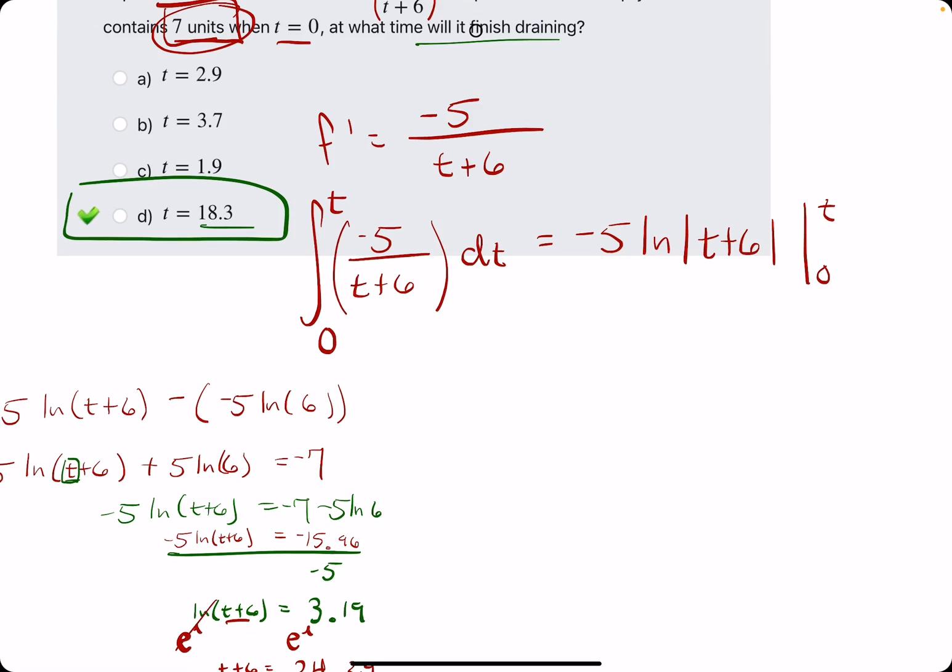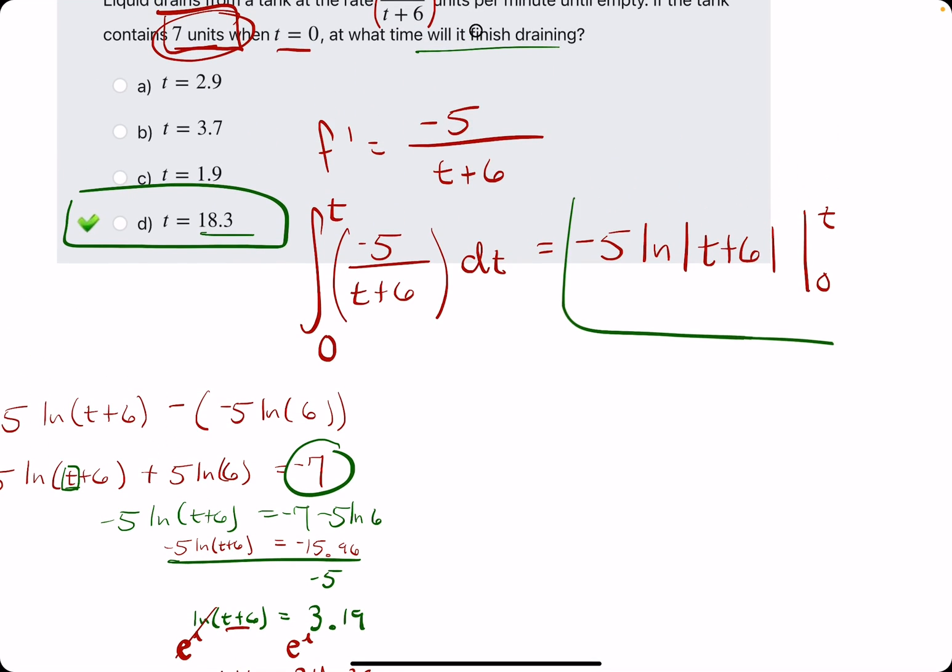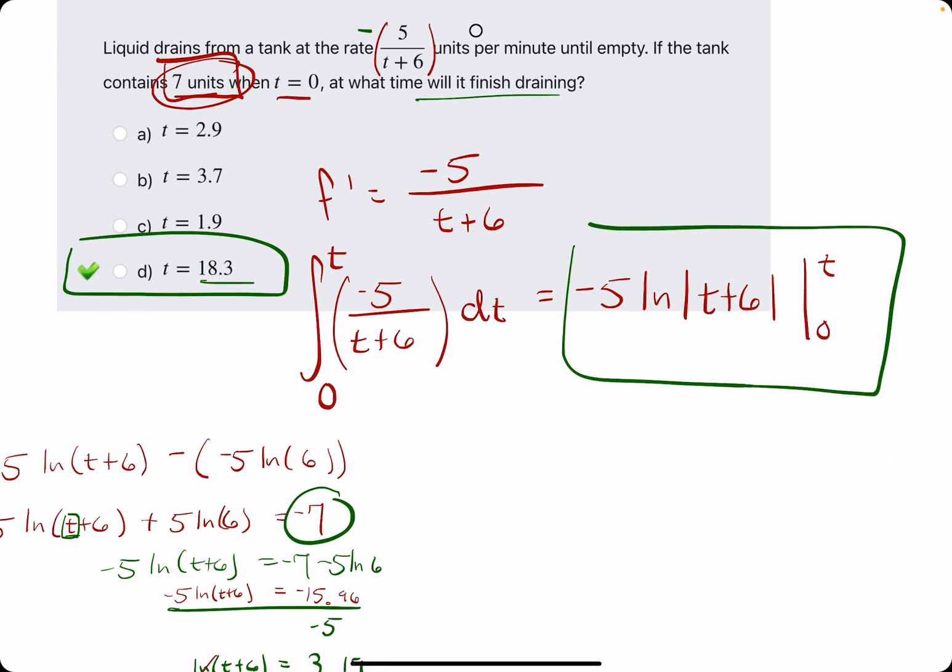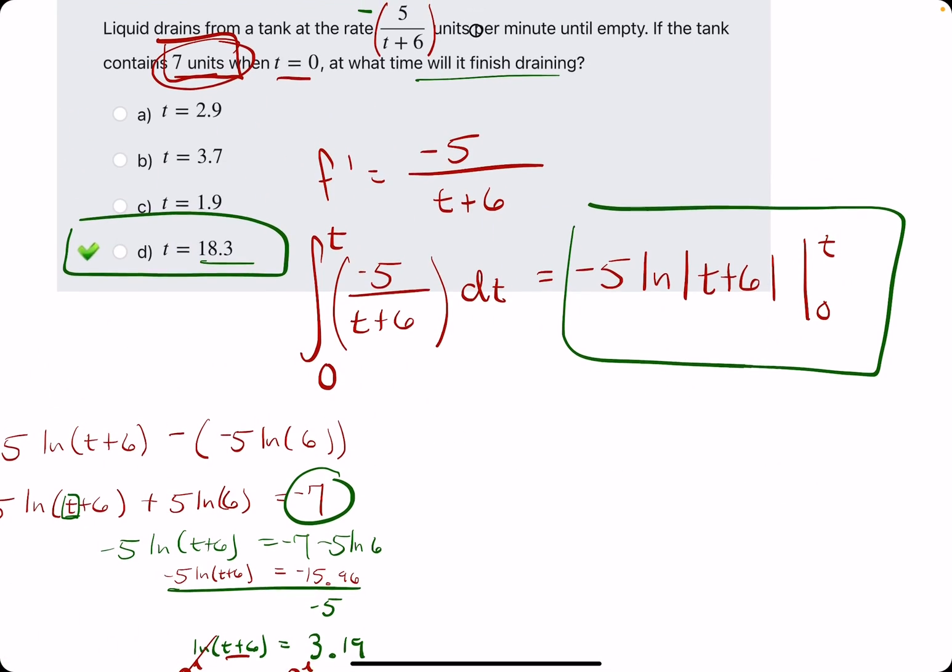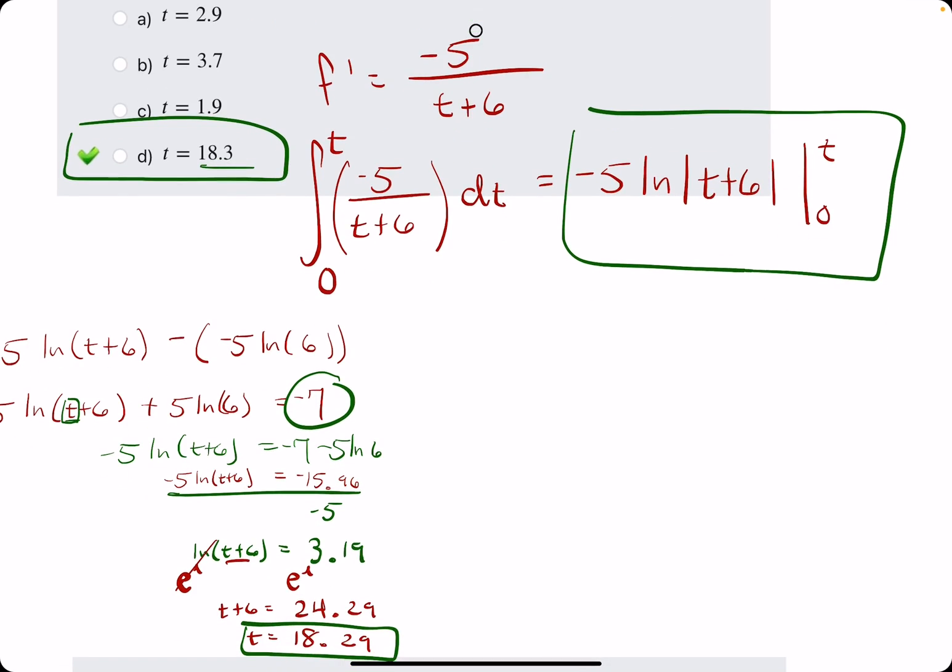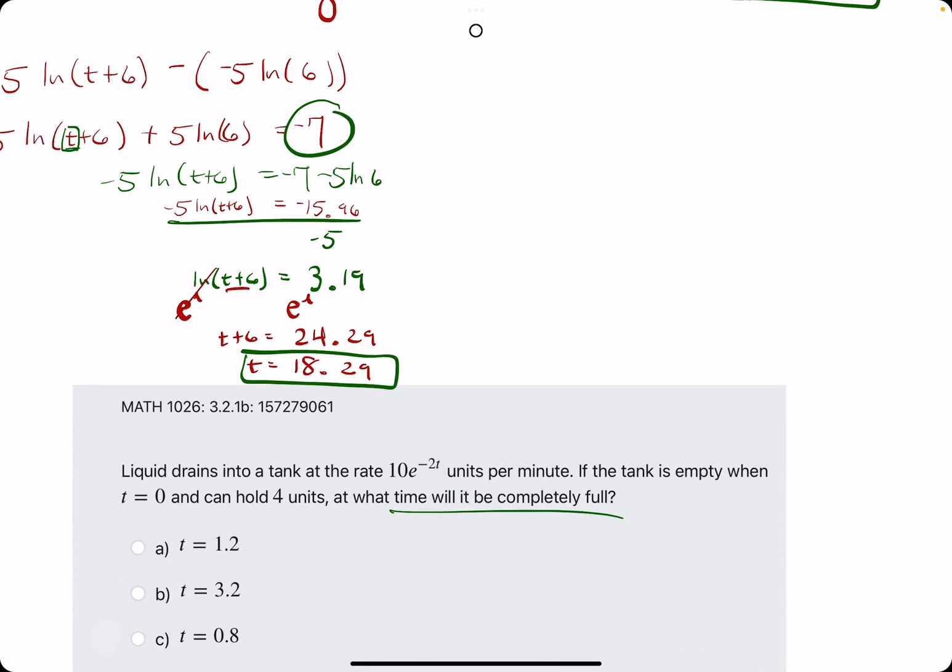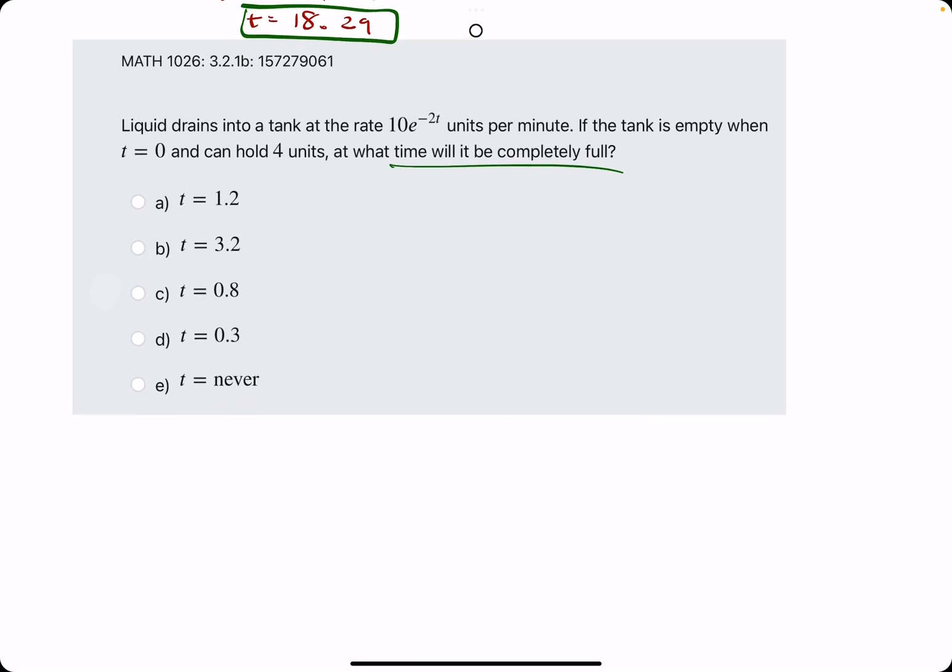The negatives we had to come up with on our own were on the rate, because it was draining, it was a draining rate from the tank. Then we had to tack on a negative to the seven because we were trying to find when the change of the water in the tank from zero to t was negative seven. We needed to know at what time would it lose seven units, because that is when it would have finished draining out.